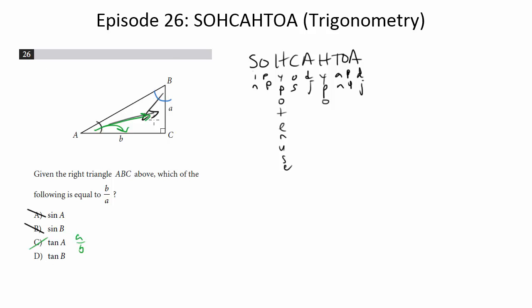Now, last one will be tangent of B. So that's going to be opposite, which is B, over adjacent, which is A. And there we go. So tangent of B is the one that fits based on SOHCAHTOA. And that's our answer.